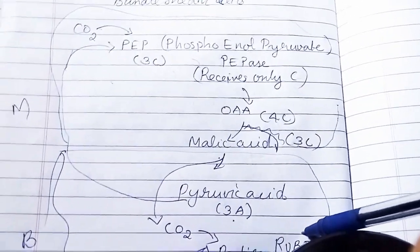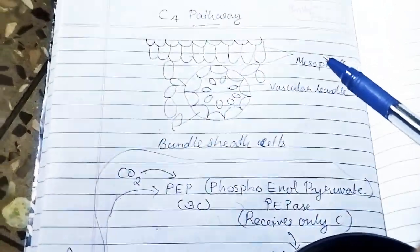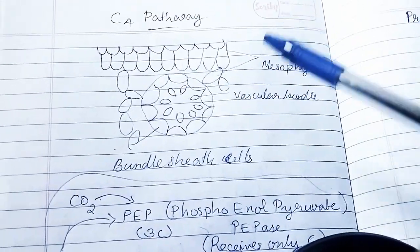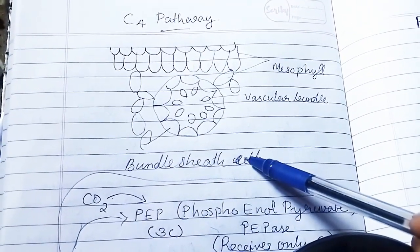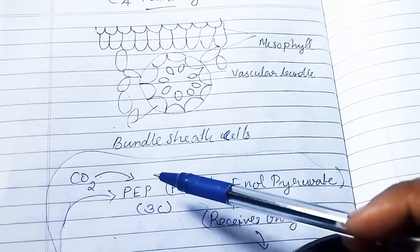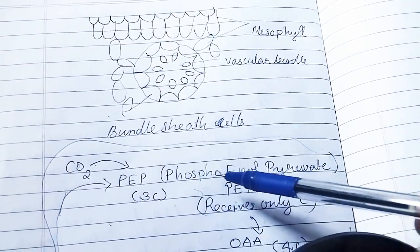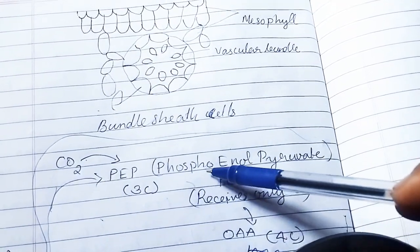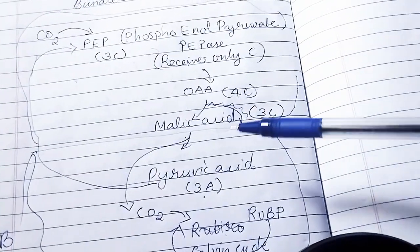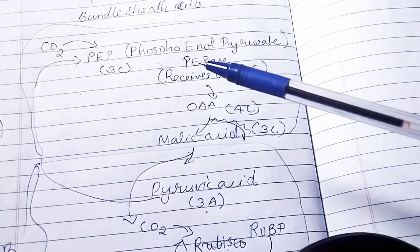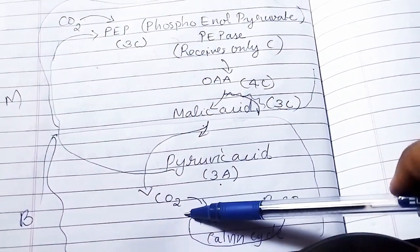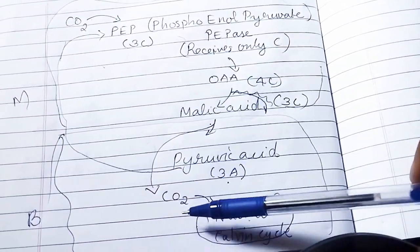Enzyme Rubisco has oxygen affinity. In the C4 pathway, mesophyll cells absorb carbon dioxide. The enzyme produces a 3-carbon compound, phosphoenolpyruvate (PEP). Carbon dioxide is then transferred to bundle sheath cells from mesophyll cells.